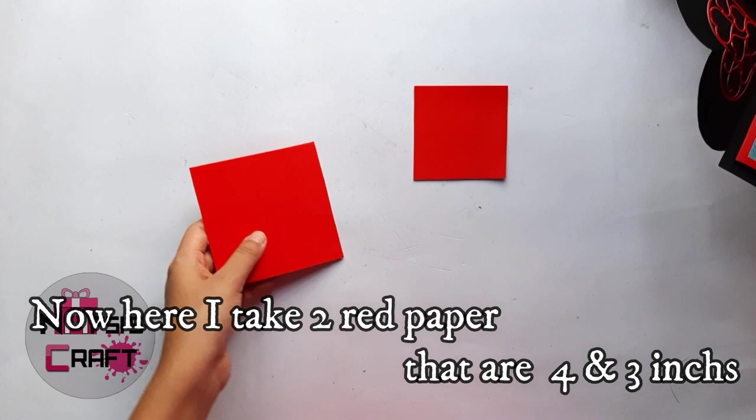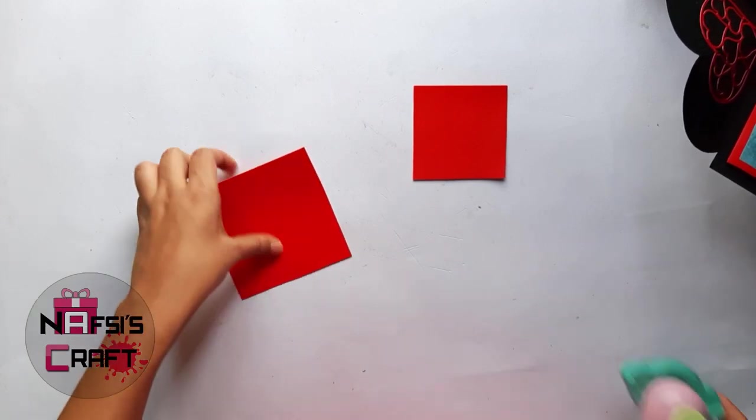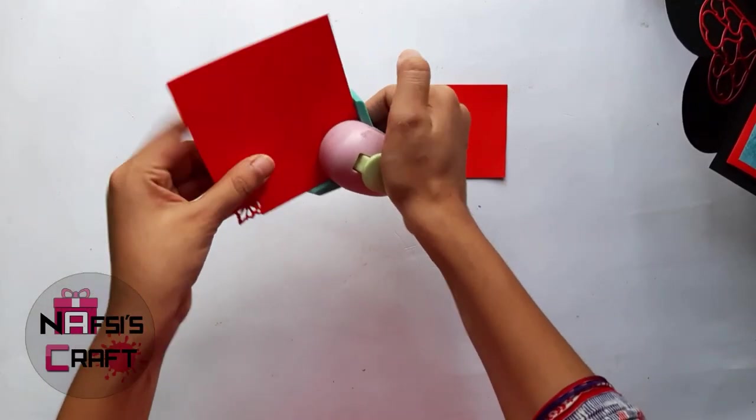Now here I am just taking 2 red paper that is 4 and 3cm. Now here I am using corner punch.